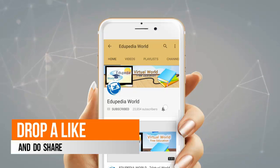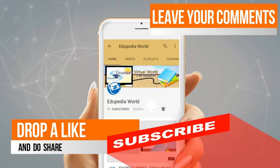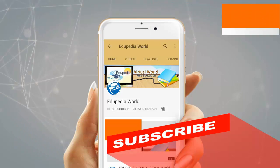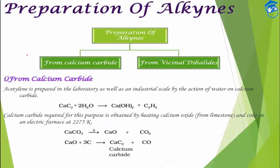Students, let's continue our topic — alkynes. In the previous video we discussed structure, nomenclature, and isomerism. In this video we will discuss the preparation of alkynes. It can be prepared either from calcium carbide or from vicinal dihalide.